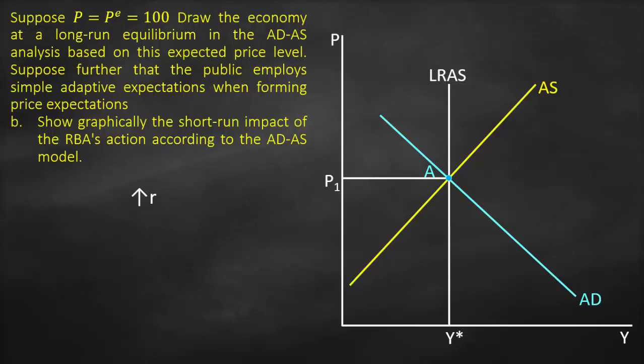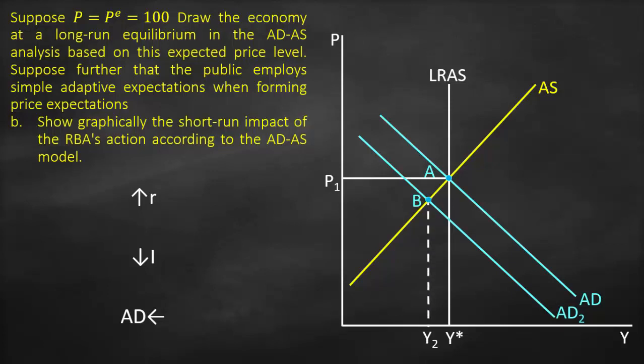Because we have higher interest rates, this would result in lower investment because of the crowding-out effect. Consequently our aggregate demand will be lower, which means aggregate demand will shift to the left — to aggregate demand 2. We have a new point of intersection between aggregate demand 2 and aggregate supply, which is point B. This gives us Y2, which is lower than Y1 or Y*, and P2, which is lower than P1.